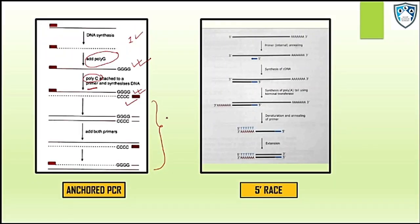This is what we see in case of five prime RACE, where our primer will bind internally and carry out the synthesis of complementary DNA. Then there will be a synthesis of the poly-A tail using terminal transferase and the denaturation and further annealing of the primer and the extension process will take place.